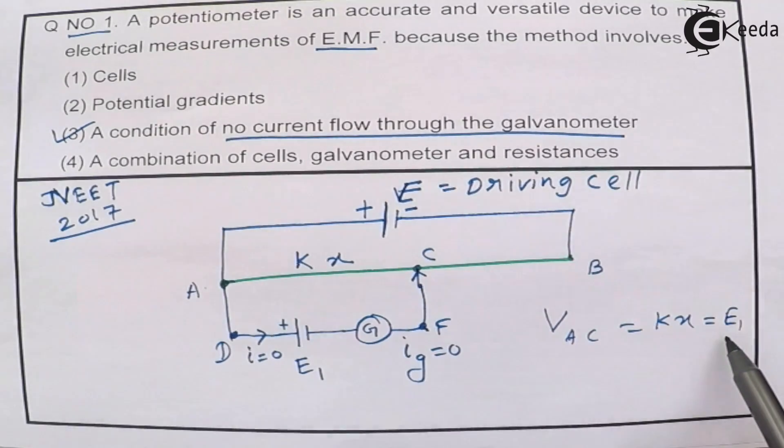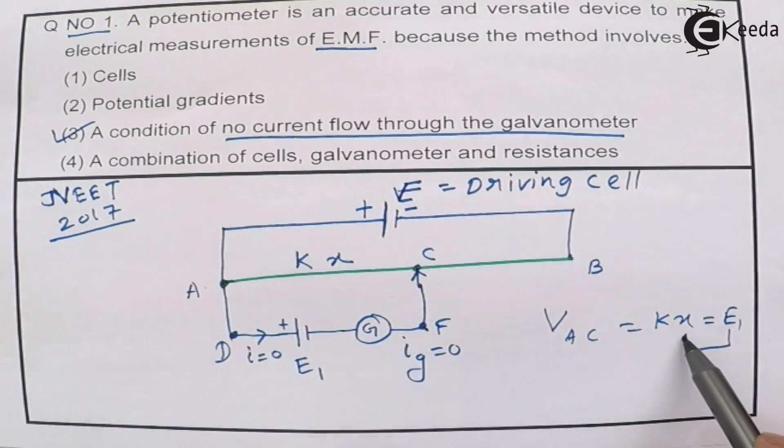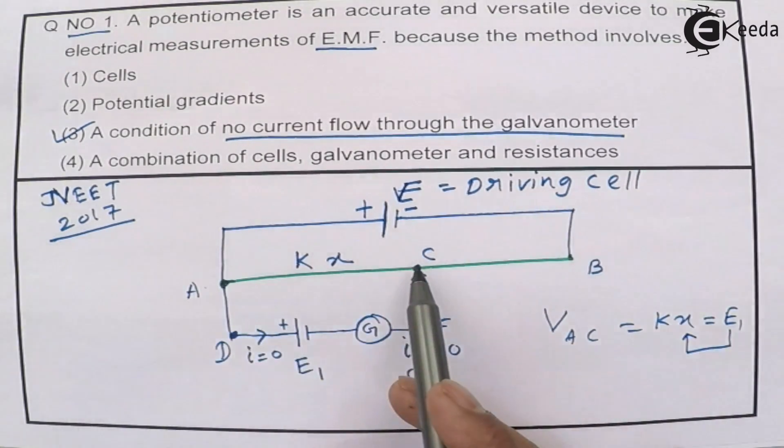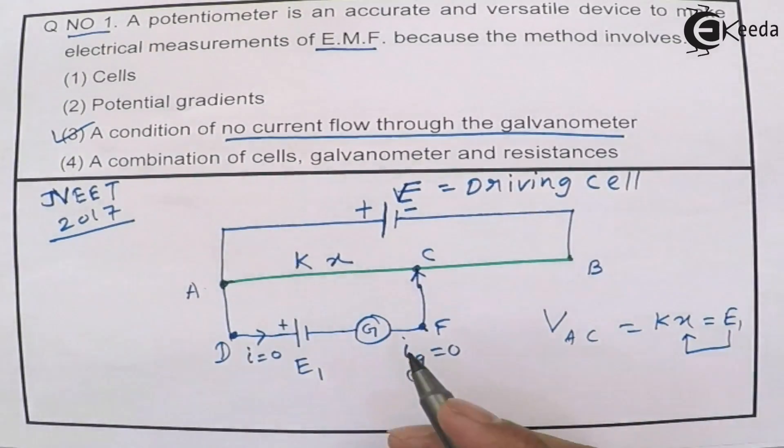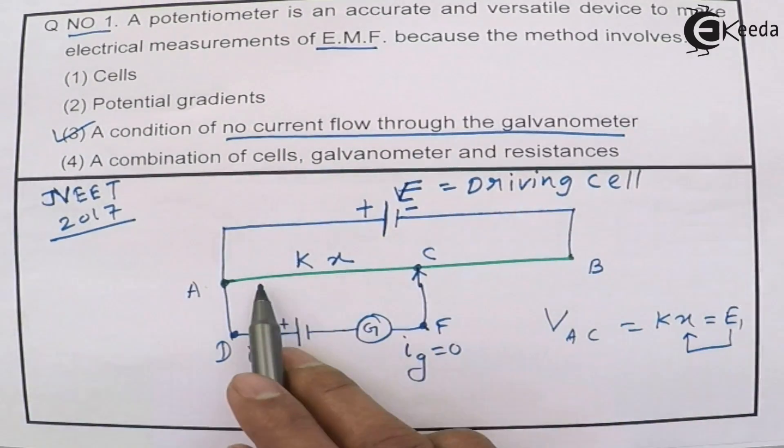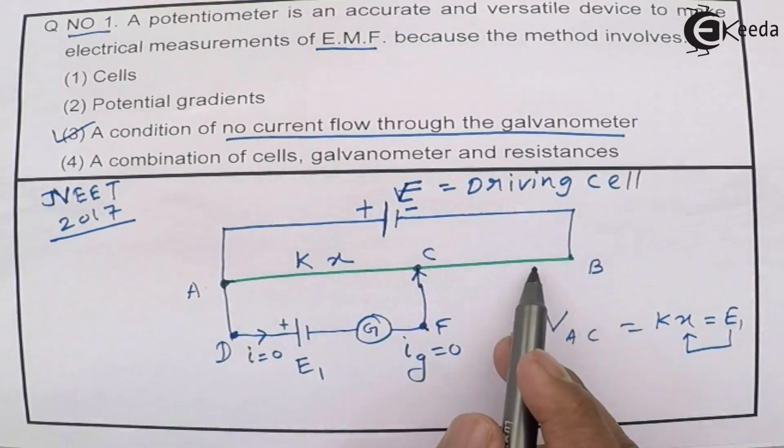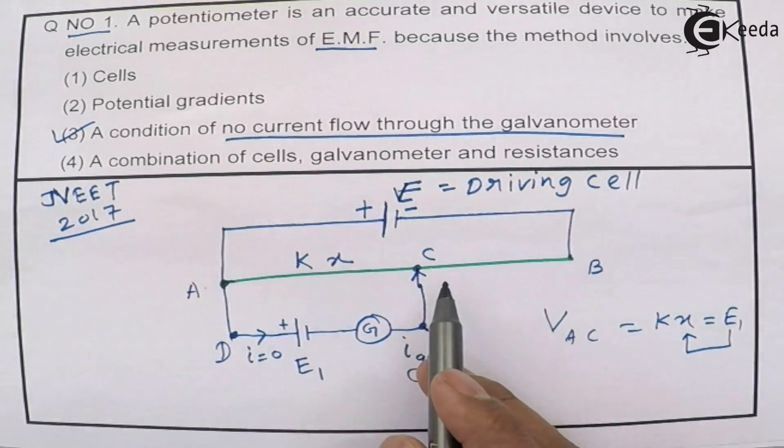This creates a potential difference across AC that is equal to KX and that potential difference must be equal to E1. So the E1 unknown is found by measuring the length of this wire and the potential gradient developed across this.